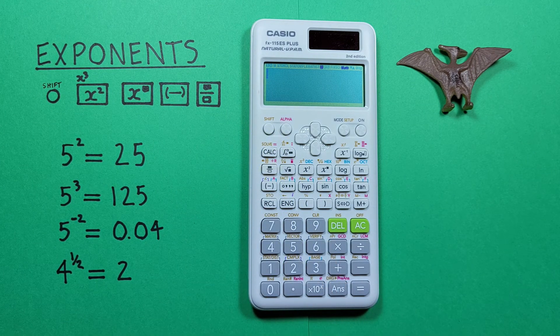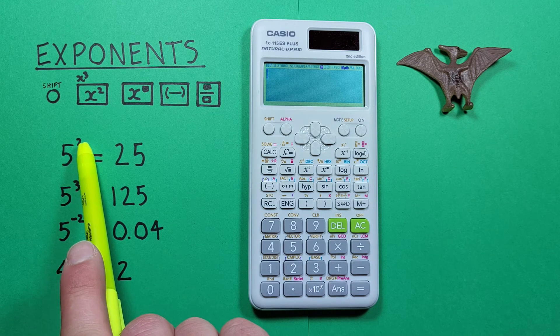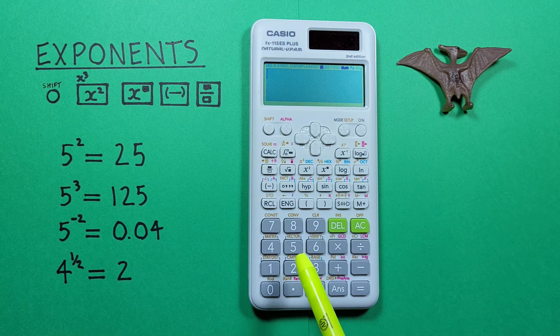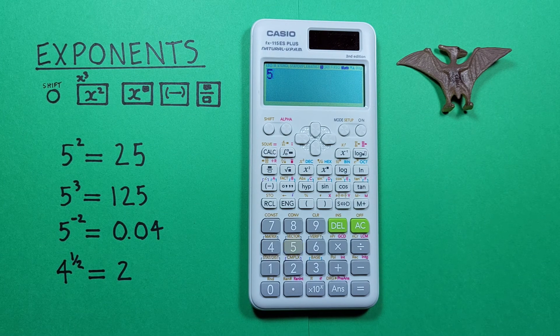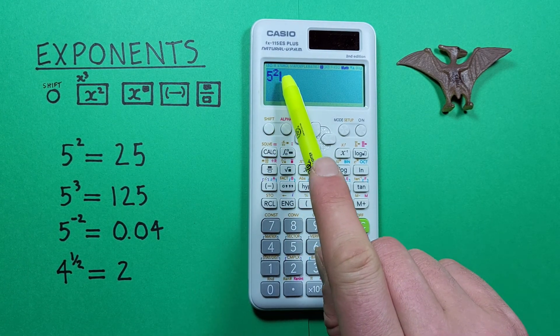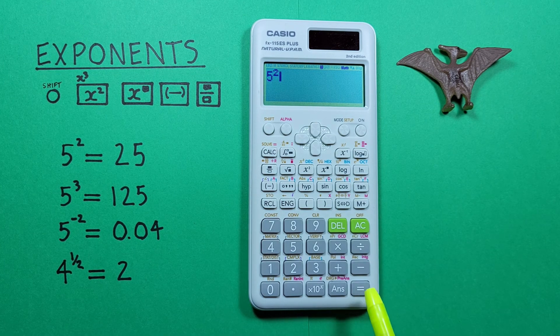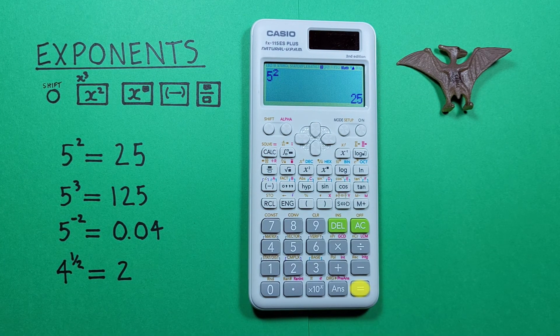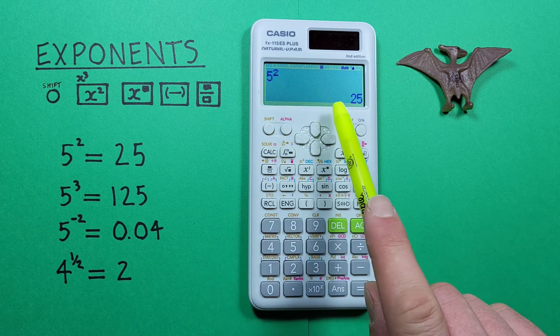If we just want to square a number, like say 5 squared, what we do is place the 5 on our screen and then press the square key. That's this one here. We see 5 squared on our screen and press equals, and we get a result of 5 squared is equal to 25.